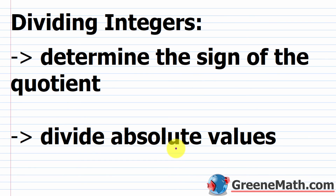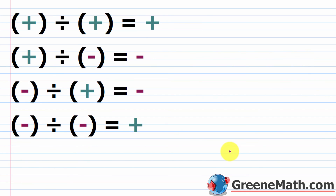Now let's move on to dividing integers — it's just as easy as multiplying. First, determine the sign of the quotient, then divide the absolute values. The sign rules: same signs give a positive quotient; different signs give a negative quotient. So positive divided by positive or negative divided by negative gives positive, while positive divided by negative or negative divided by positive gives negative.